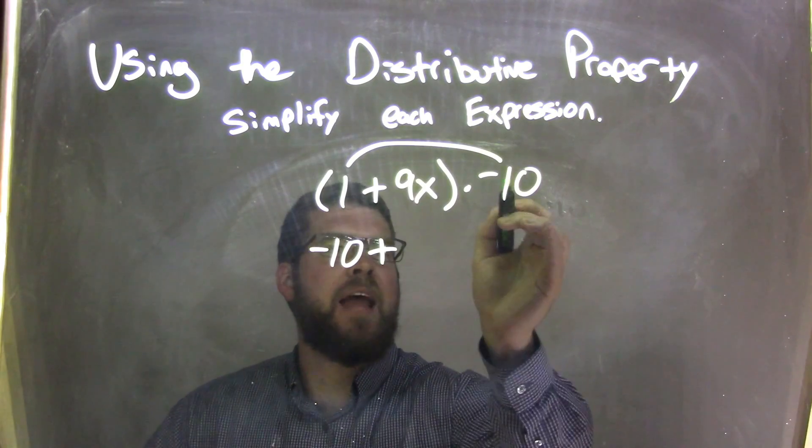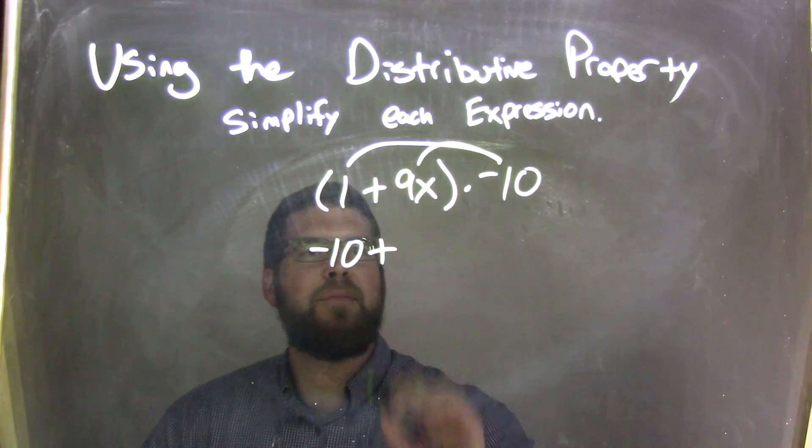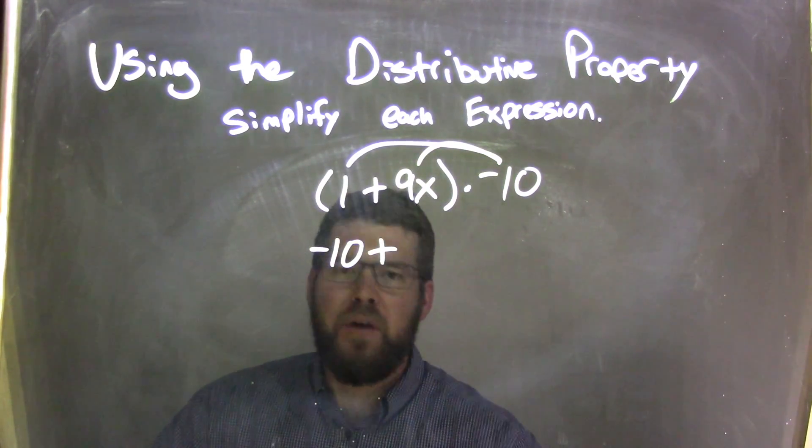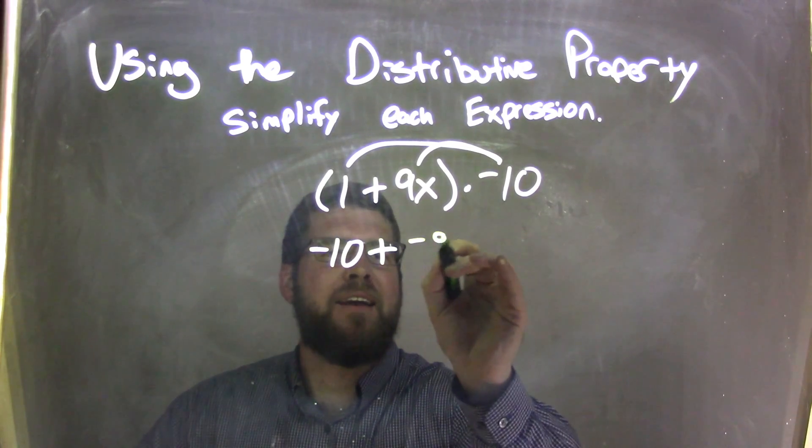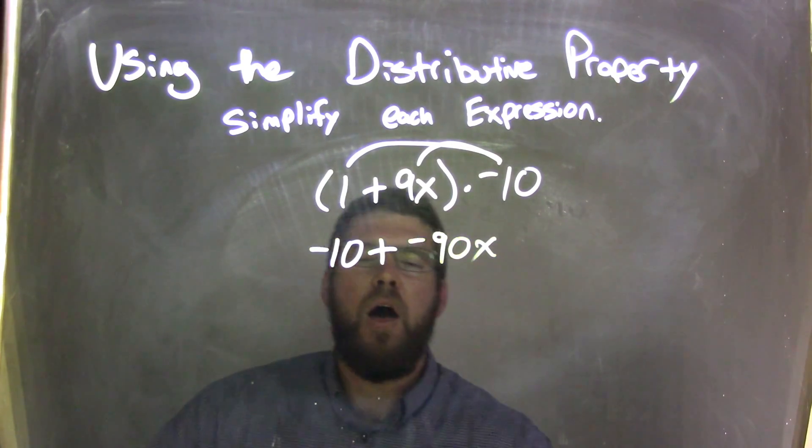Bring down that plus sign here. Now we're left with negative 10 times 9x. Well, that's pretty easy, right? Negative 90x.